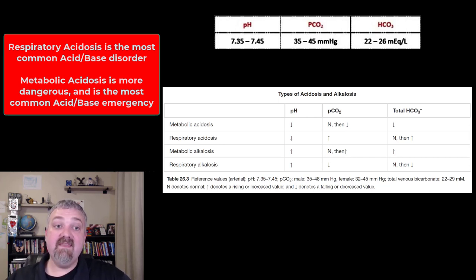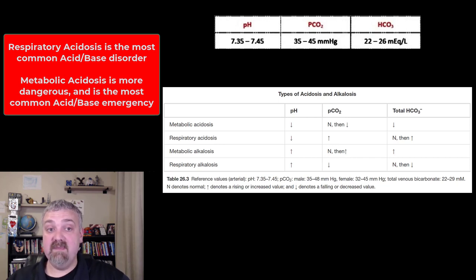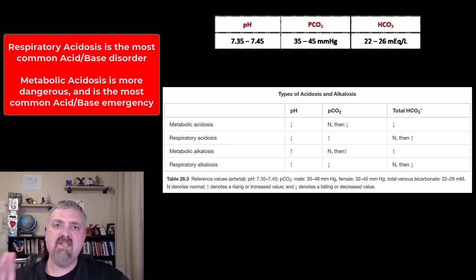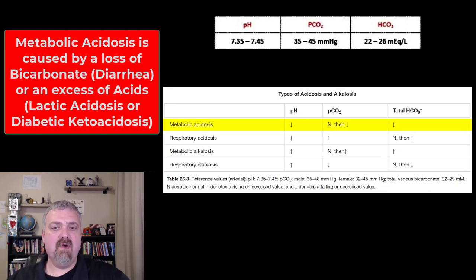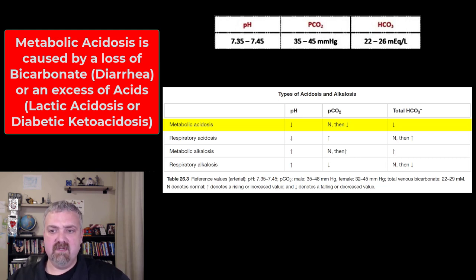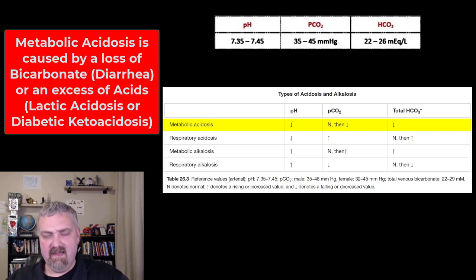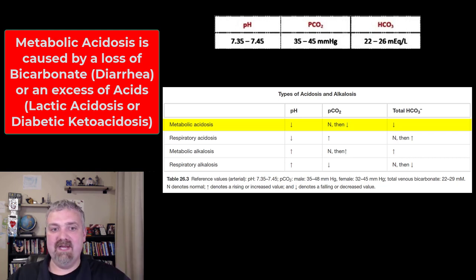But metabolic acidosis — I think that's the most common in the intensive care unit and the most common to be serious emergencies. Some people on Google will say metabolic acidosis is most common overall, so I just wanted to pause and note that. You'll see even the numbers I put on the screen are a little different than the numbers in table 26.3 — there's going to be some variability, but we're going to be talking higher and lower here.